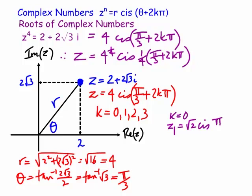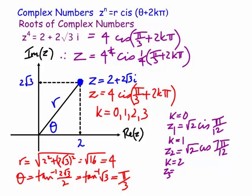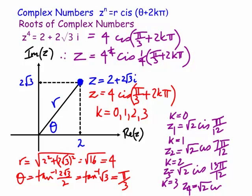For k = 1: z₂ = √2 cis(7π/12). For k = 2: z₃ = √2 cis(13π/12). For k = 3: z₄ = √2 cis(19π/12). These are the four fourth roots of the complex number.